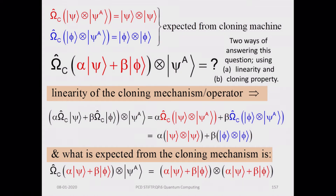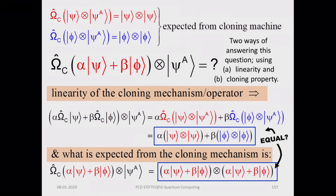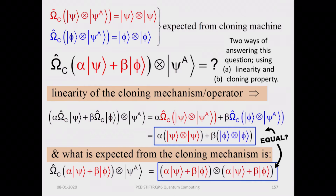Both methods are standard practices in quantum theory — we have used the well-known rules of quantum mechanics. We must ask if the results from these two alternative ways are equal. They should be if this logic is sustainable. So we ask: is what is obtained from linearity equal to what the cloning mechanism gives? On the left hand side we have alpha times two copies of psi, plus beta times two copies of phi. On the right hand side we have two copies of the superposed state.